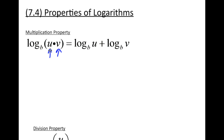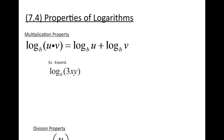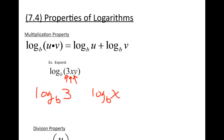Let's take a look at an example of where we can use this to expand a logarithm. If I have a problem like log base b of 3xy and I want to expand this single log into multiple logs, I look at how many different things I have multiplied inside the argument. I have three different things: a 3, an x, and a y. I expand this single log by giving each factor its own logarithm, and since these three items are being multiplied, they are added. That's how we use the multiplication property of logs to expand a single log into multiple logs.